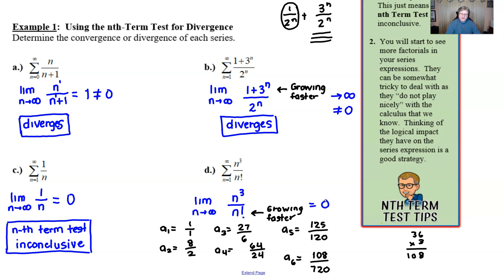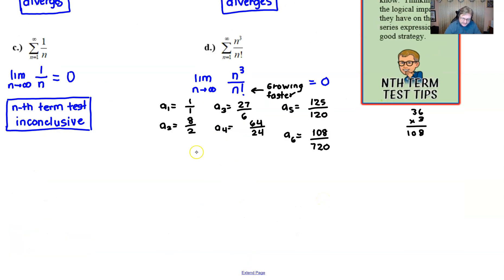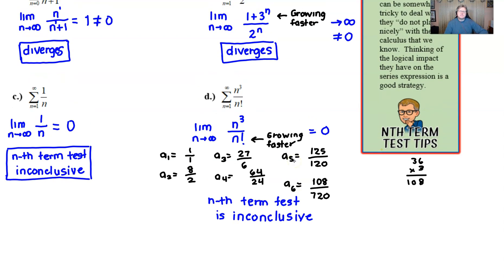And in fact, it grows much faster. By the time you get a very large value of n, this n factorial will destroy n to the third. And so therefore, this limit is actually going to approach 0. 0 is not what we want for our divergence test. And so once again, we're going to have to say that we don't really know what's happening here. The nth term test is inconclusive. Now, if you're wondering, is there a way to figure out what this series does? And there is. You're probably going to have to stick around for a while because I think the best test to use comes later on in this particular unit. And it's actually an easy test to use. Turns out that this guy is going to converge. We'll find out later why.